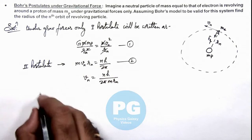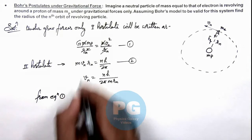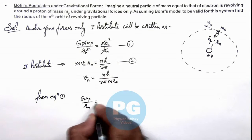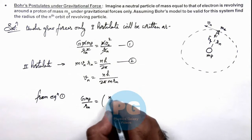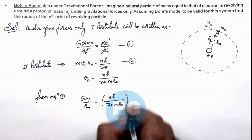And now from equation 1, if we substitute the value, this is G mp over rn equals vn square, which is n h over 2π m rn whole square.